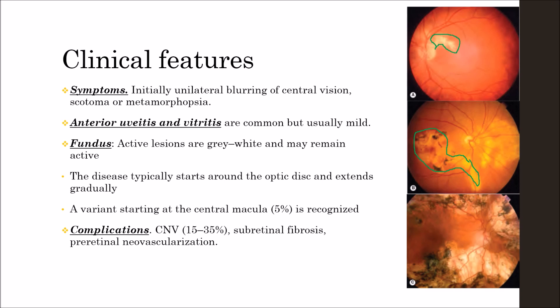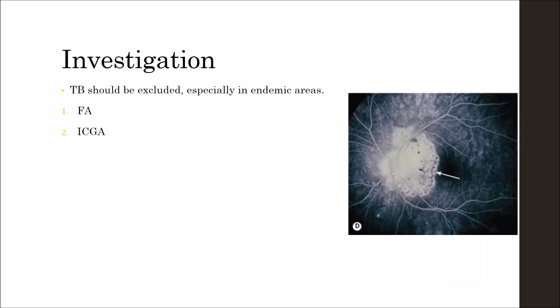This is an active lesion shown in the last picture with extensive atrophy. Choroidal neovascularization is a complication occurring in 15 to 35% of people, along with subretinal fibrosis and pre-retinal neovascularization. TB uveitis should be excluded, especially in endemic areas.